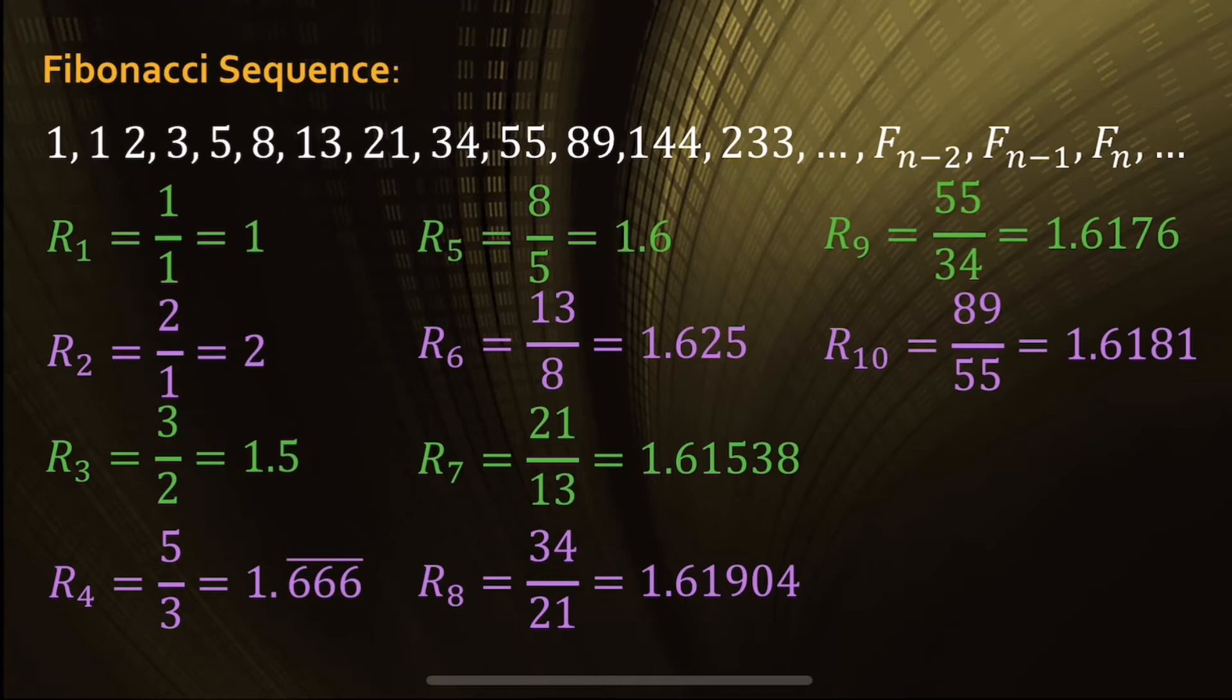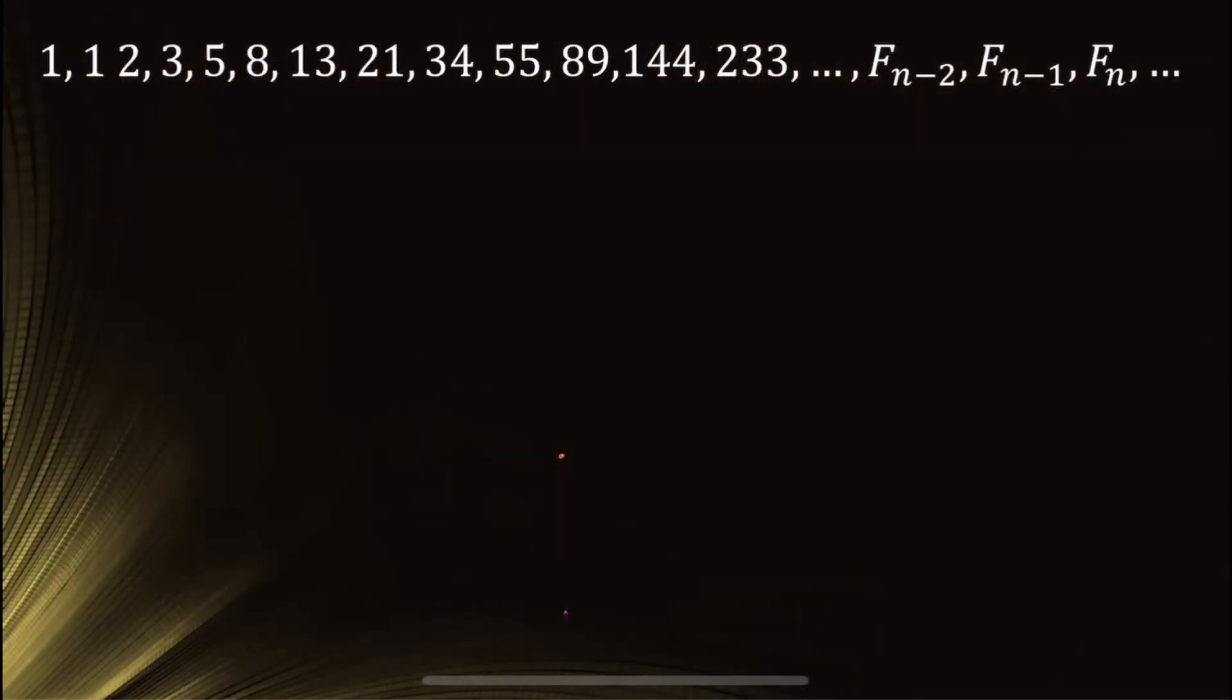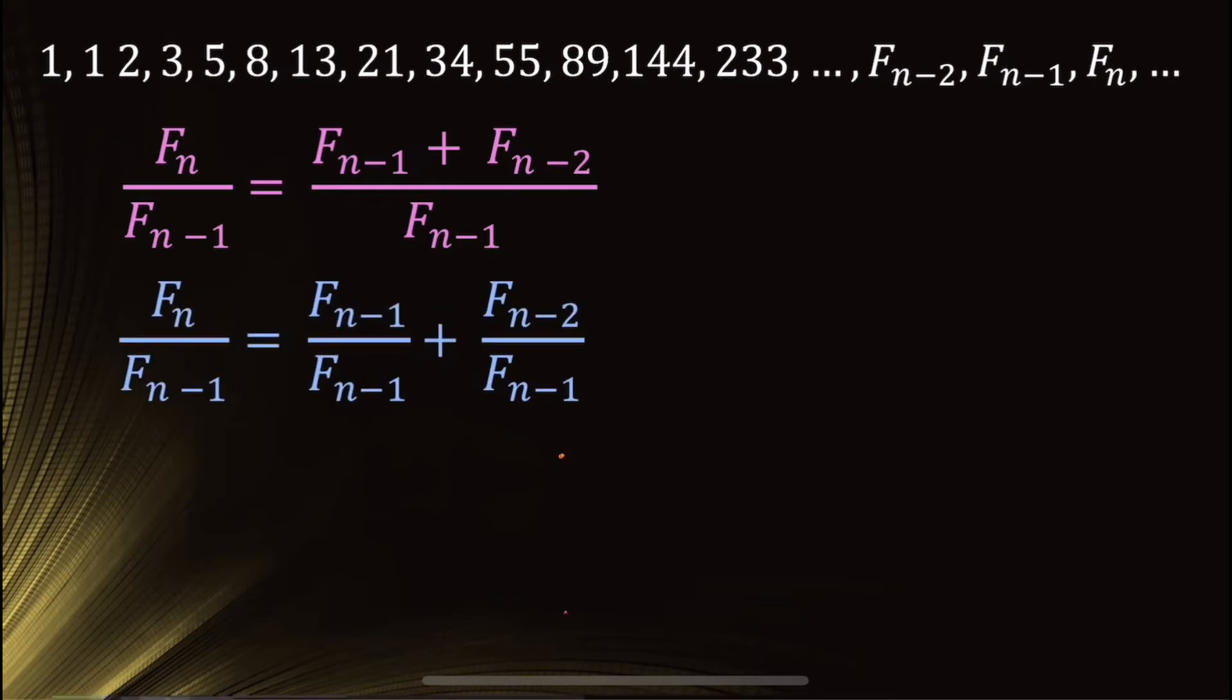And as we go way off to the right in this sequence and the numbers get really, really big, is that ratio approaching some value? To figure this out, we need to use calculus. And we can ask the question, what is the limit as n goes to infinity of f sub n over f sub n minus 1? Now let's rewrite the fraction so we can try to make sense of it. Remember that f sub n is just the sum of the two preceding numbers, f sub n minus 1 and f sub n minus 2.